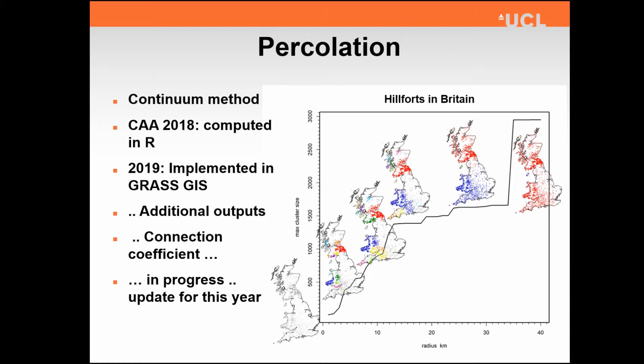Just as a brief recap, the method that we're using is a continuum method. We are looking at clusters that are formed based on the distance between points. Earlier methods are based on a cellular array or a grid or a matrix, but the continuum method works on precisely the distance between points rather than a grid array. As I presented last year, that was implemented in R, but now we have a solution implemented in GrassGIS. One of the drivers for that is to generate more outputs, and in particular, a connection coefficient.